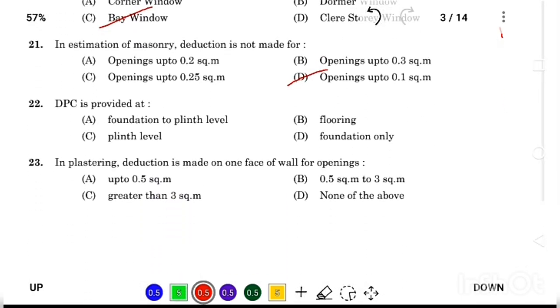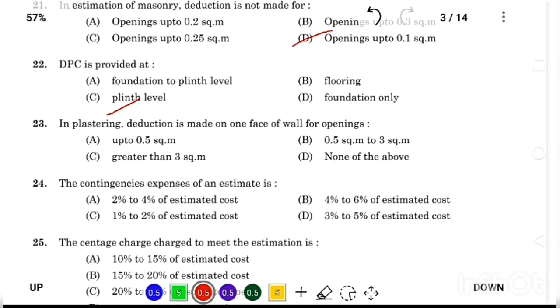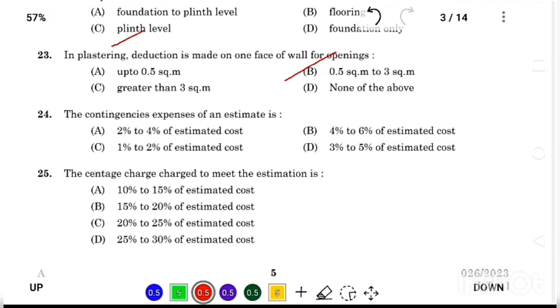DPC is provided at Answer Option C, plinth level. In plastering, deduction is made on face of wall for opening Answer Option B, 0.5 square meter to 3 square meter. The contingency expenses of the estimate is Answer Option D, 3% to 5% of estimated cost.